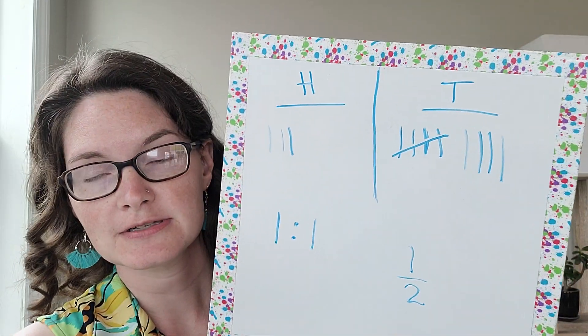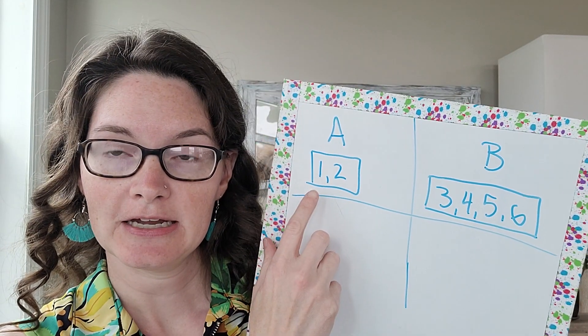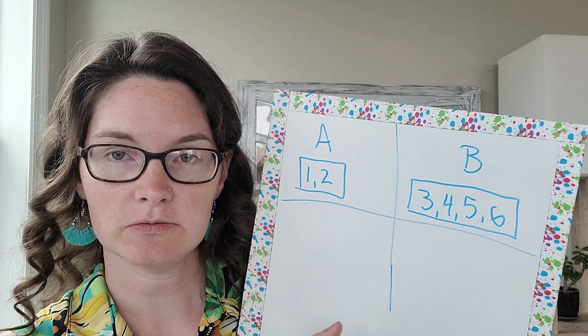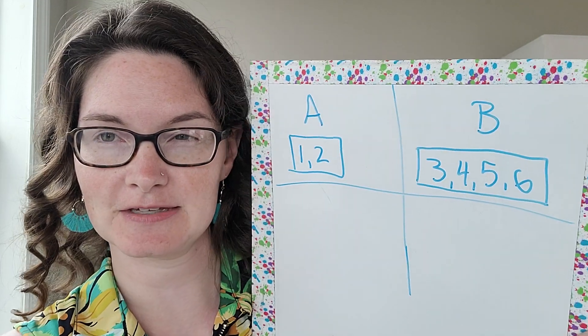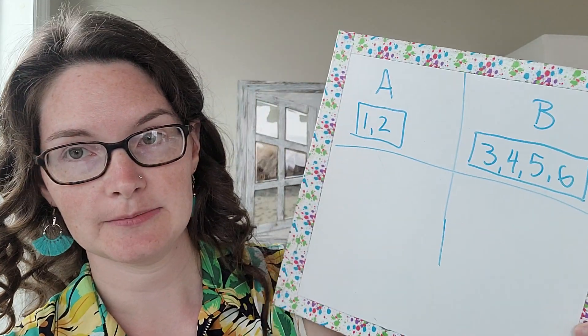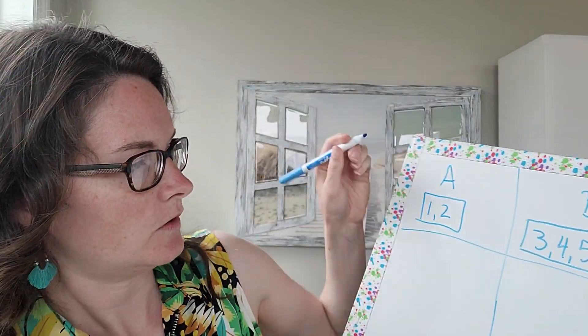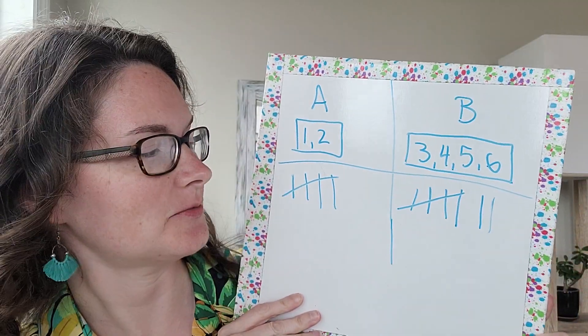Now try it with the dice using the same groups. Group A wins if we roll a one or two; Group B wins if we roll a three, four, five, or six. Roll the dice the same 12 times and see what you get. One, two, three, four, five, six, seven, eight, nine, ten, eleven, and twelve. Interestingly, this looks a little more even than the coin toss did.